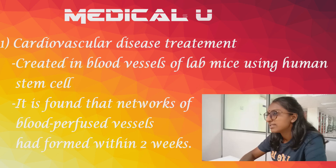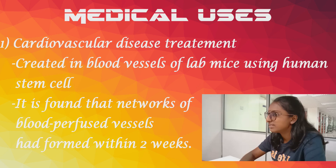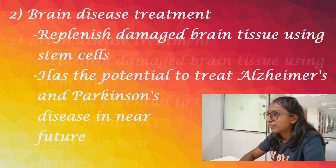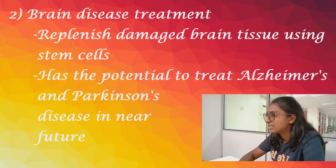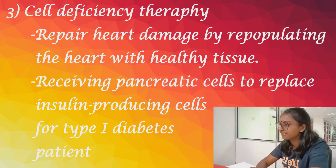Many stem cells can take on the role of any type of cell and could save lives. Stem cells can treat cardiovascular diseases — blood vessels created in laboratory mice using human cells formed a network of blood-perfused vessels within two weeks, potentially treating cardiovascular and vascular diseases. Stem cells can also treat brain diseases by replenishing damaged brain tissue, and may treat Alzheimer's and Parkinson's diseases in the near future. Additionally, stem cells help in cell deficiency therapy: heart damage can be repaired by repopulating the heart with healthy tissue, and type 1 diabetic patients can receive pancreatic cells to replace insulin-producing cells.